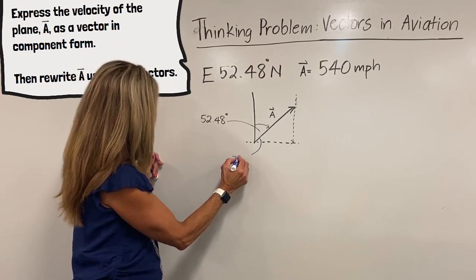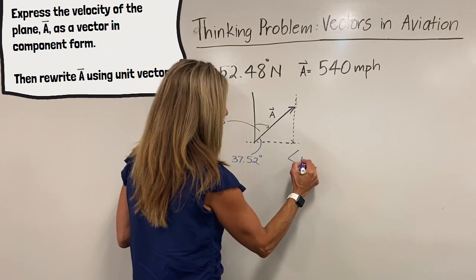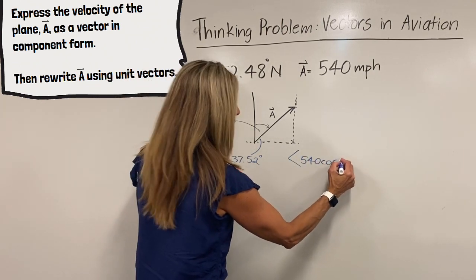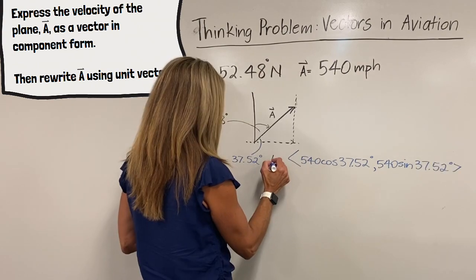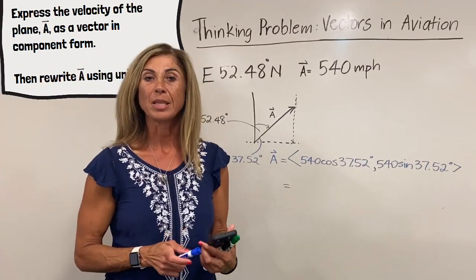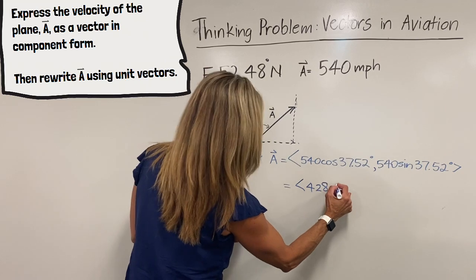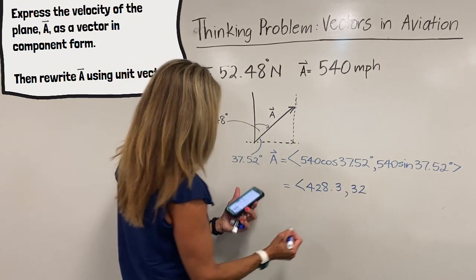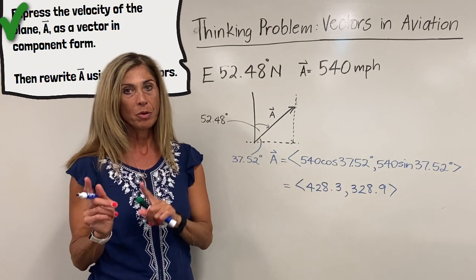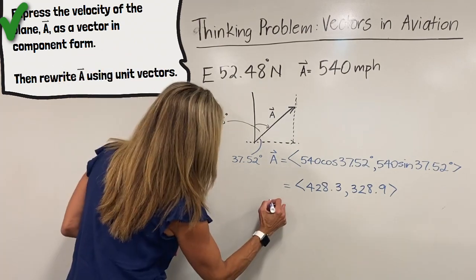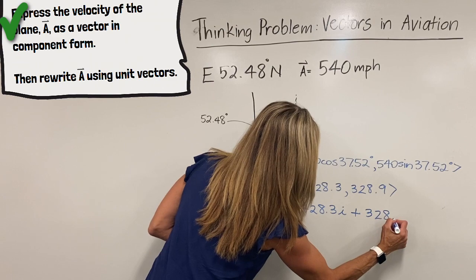So we have our horizontal component, which is the magnitude times cosine of the angle, and our vertical component, which is the magnitude times sine of the angle. This gives us the plane's vector with a horizontal component of 428.3 and a vertical component of 328.9. There is our plane vector in component form.